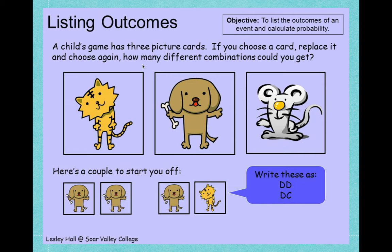Now let's look at this example. A child's game has three pictures — a cat, a dog, and a mouse. If you choose a card, replace it, and choose again, how many different combinations could you get? For example, we pick a card with a dog, put it back, and pick another card with a dog — so one outcome is dog-dog. Then we pick a dog, put it back, and pick a cat — so we can have dog and cat. Now think about what other outcomes we can have.